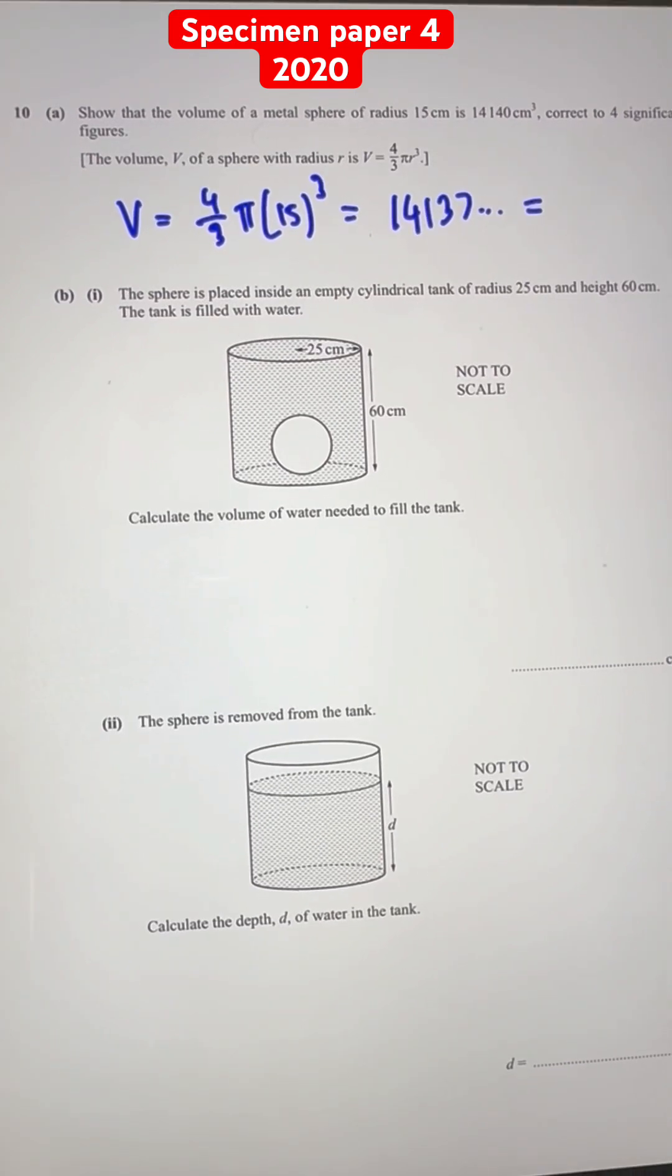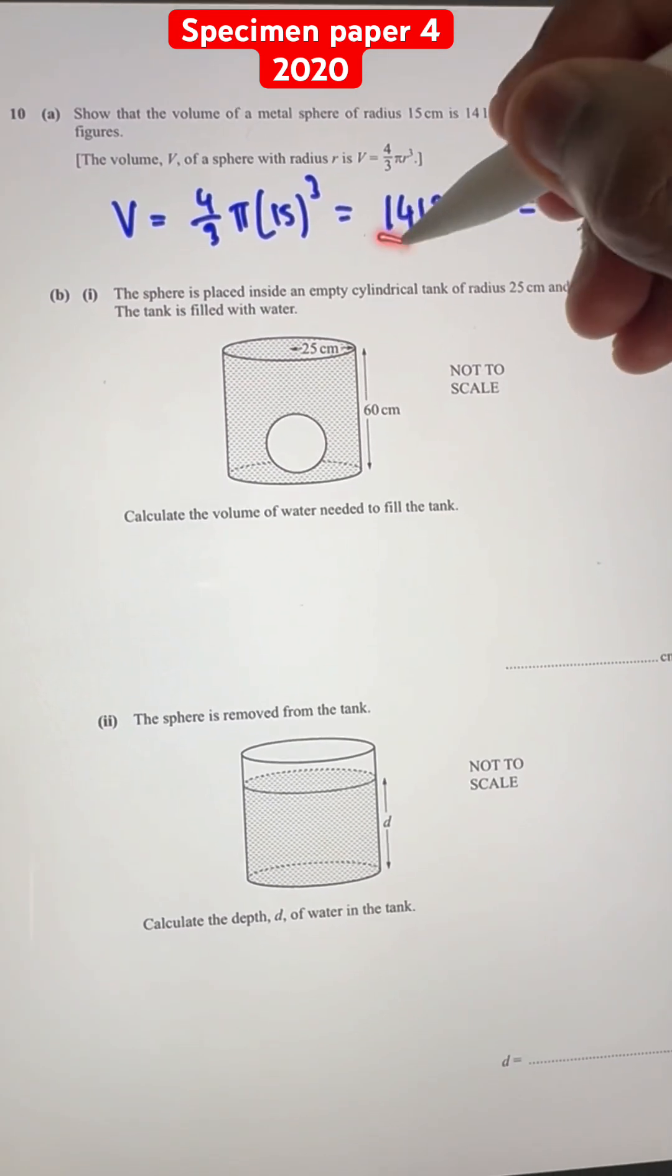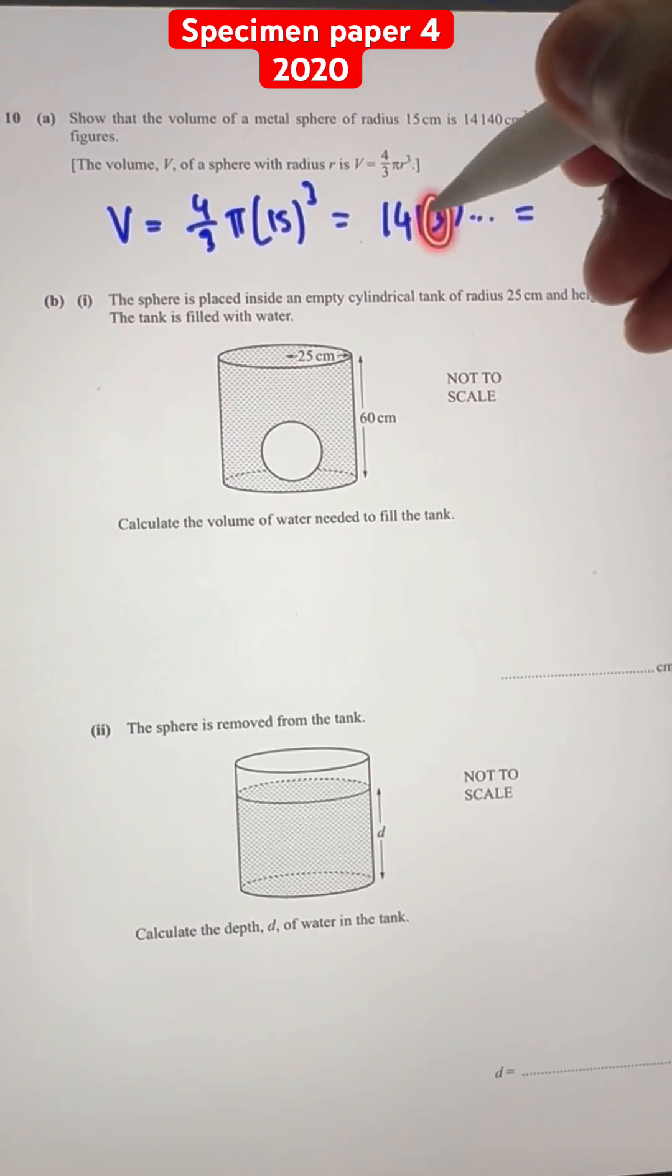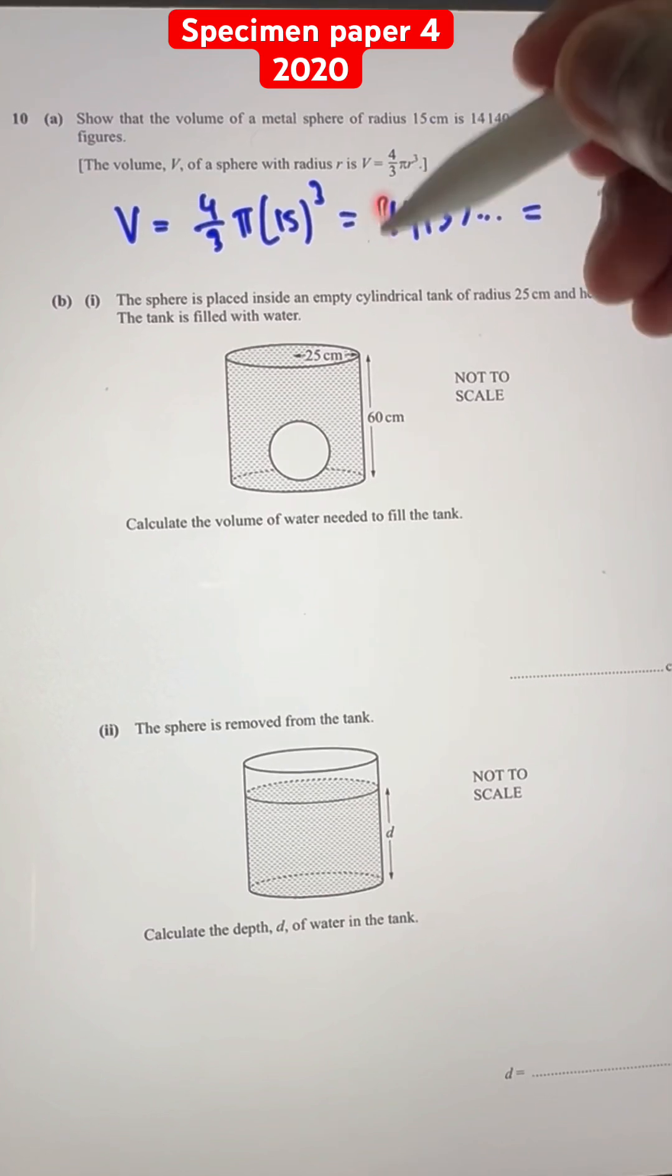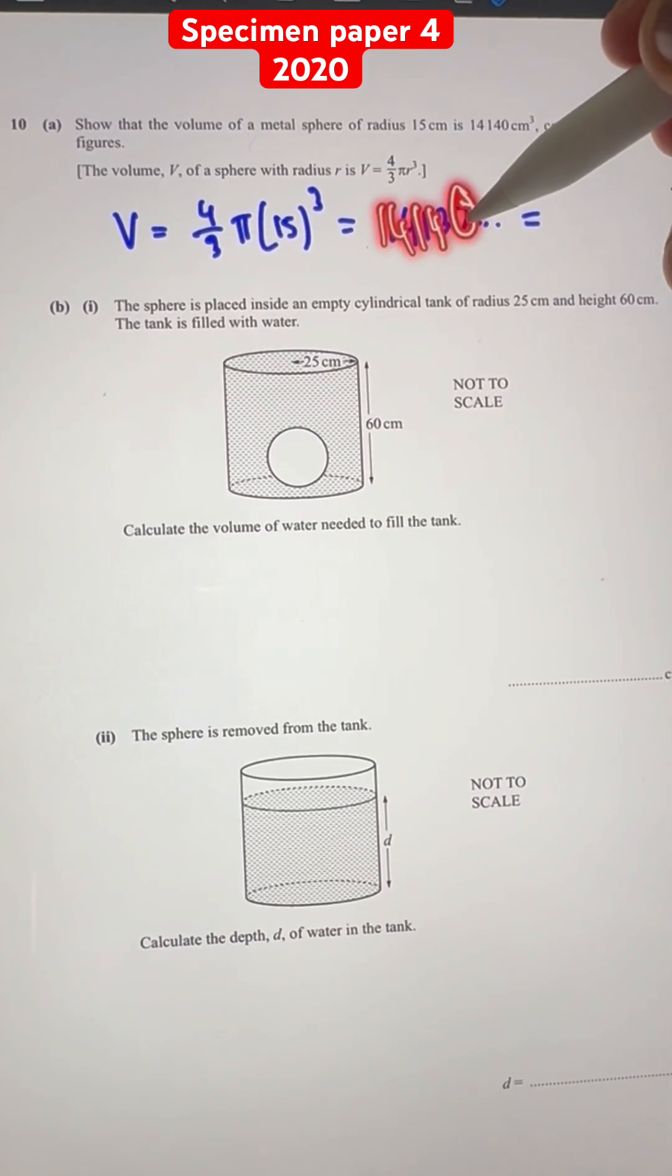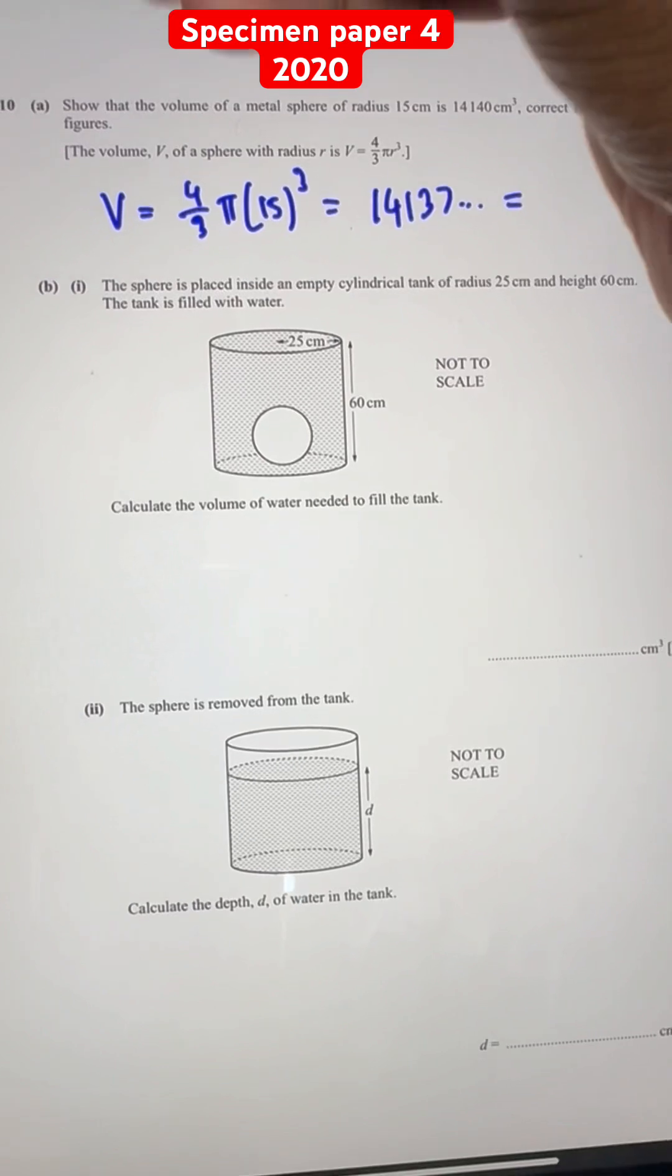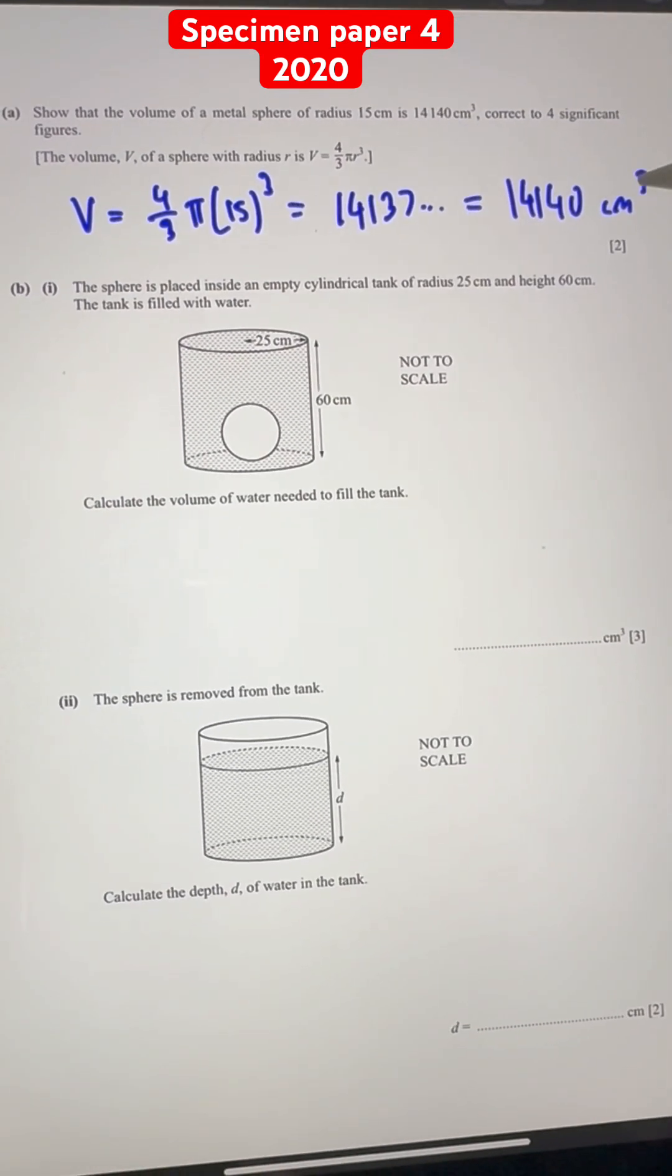And to 4 significant figures, we can see the 5th one is over here. We have 1, 2, 3, 4. And the 5th significant figure is greater than or equal to 5. So we add 1 to this significant figure. So plus 1 and we get 4. So 1414 and we replace this with a 0 because it's before the decimal point. And then this becomes 0s after decimal point. So it's just 14140 cm³ to 4 significant figures.